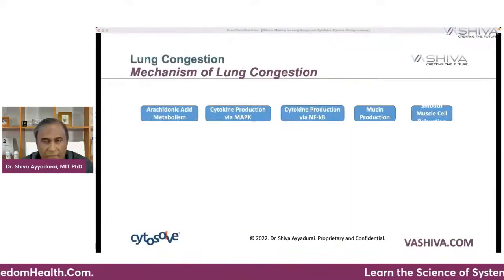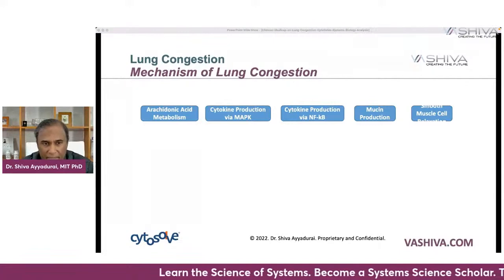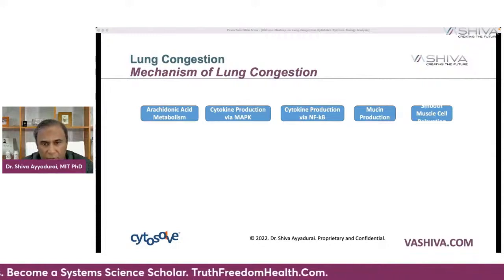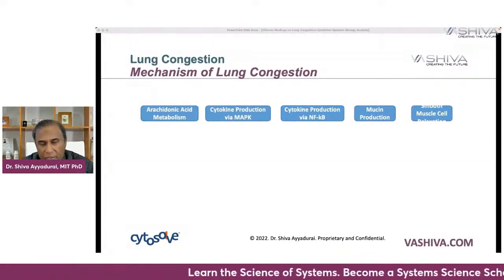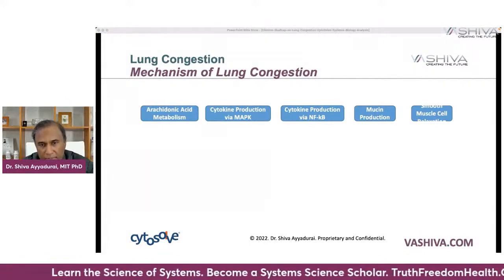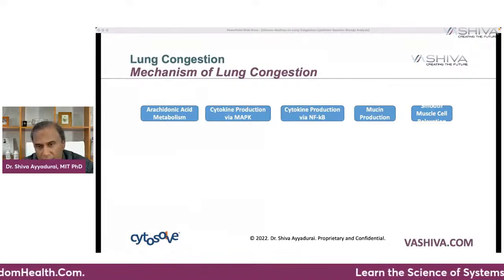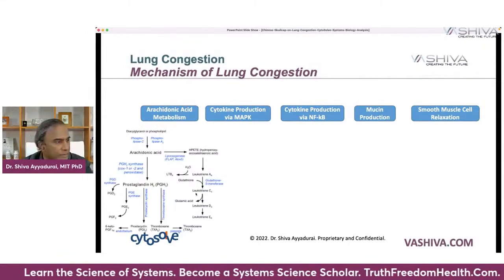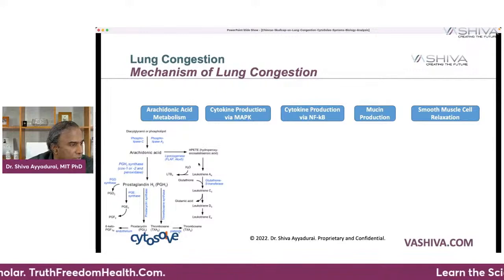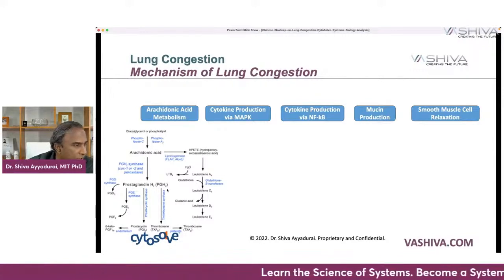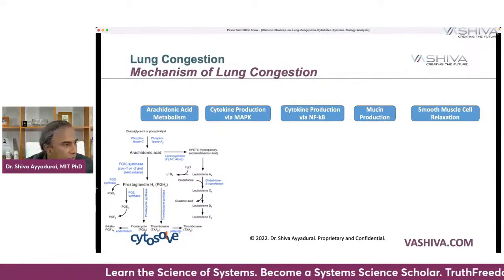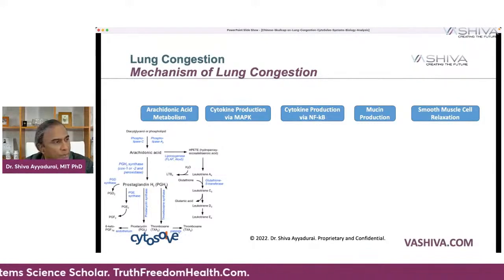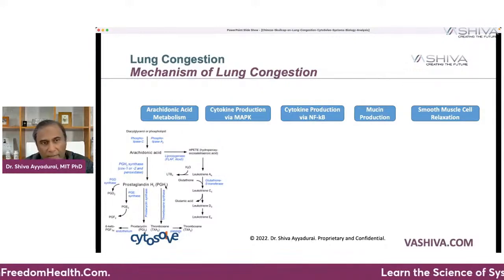Let's talk about lung congestion and its five biomolecular mechanisms. The first is arachidonic acid metabolism, which produces prostaglandin PGH2 and ultimately PGE2, driving the inflammatory process — high PGE2 means high inflammation. The second is cytokine production via the MAPK pathway, producing IL-6, TNF-alpha, and COX-2. The third is cytokine production through NF-kappa-beta, where NF-kappa-beta crosses the nuclear membrane producing IL-6, another inflammatory cytokine.